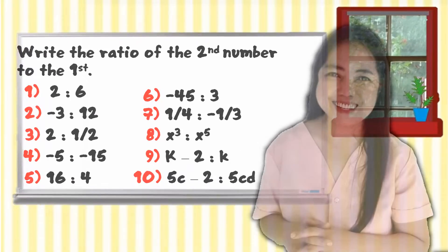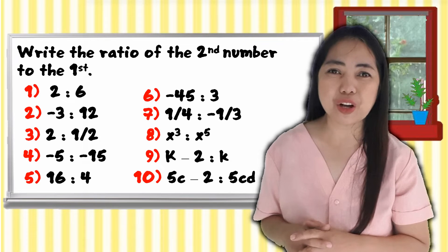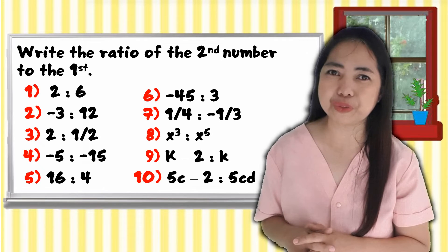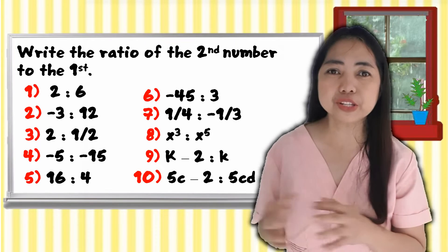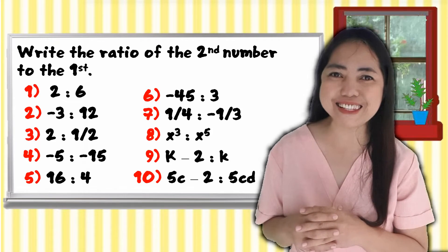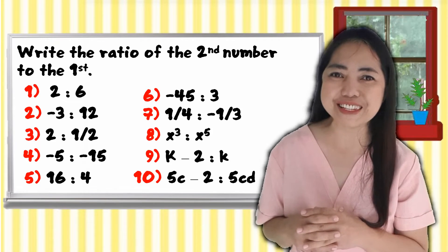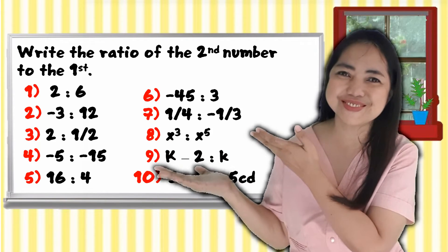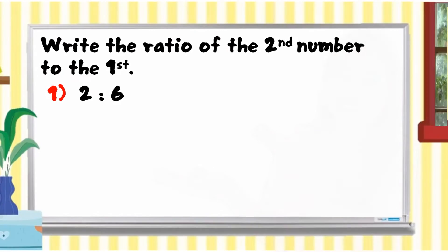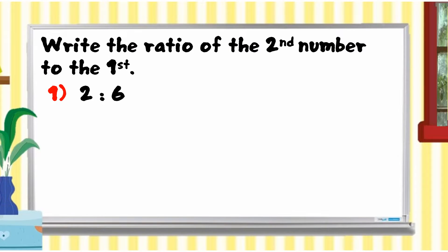In this topic, we need to know the concept of getting the ratio of two numbers. So we will start the discussion by answering this activity. Write the ratio of the second number to the first. Example 1: 2 is to 6. We just need to divide the second number by the first number.